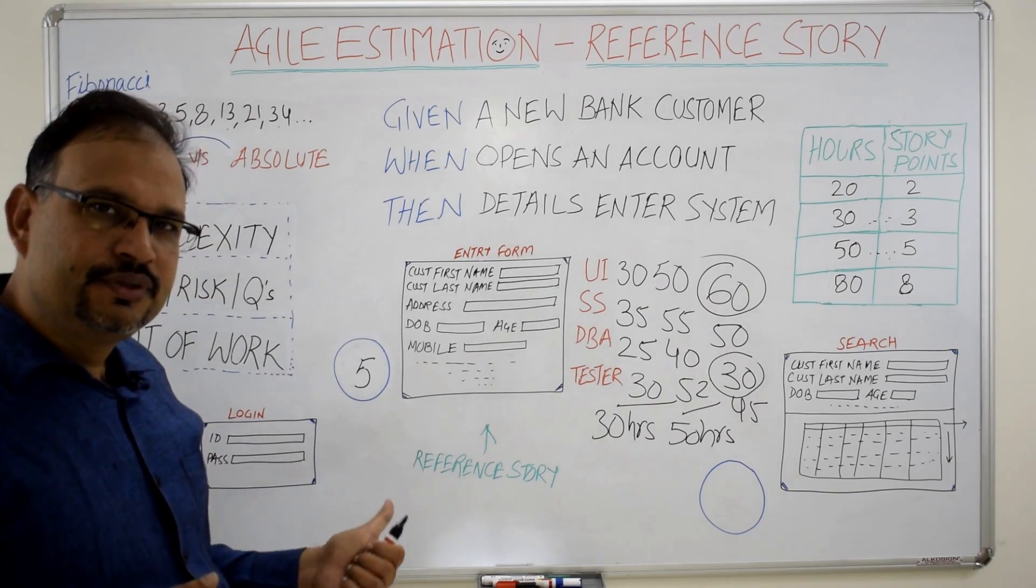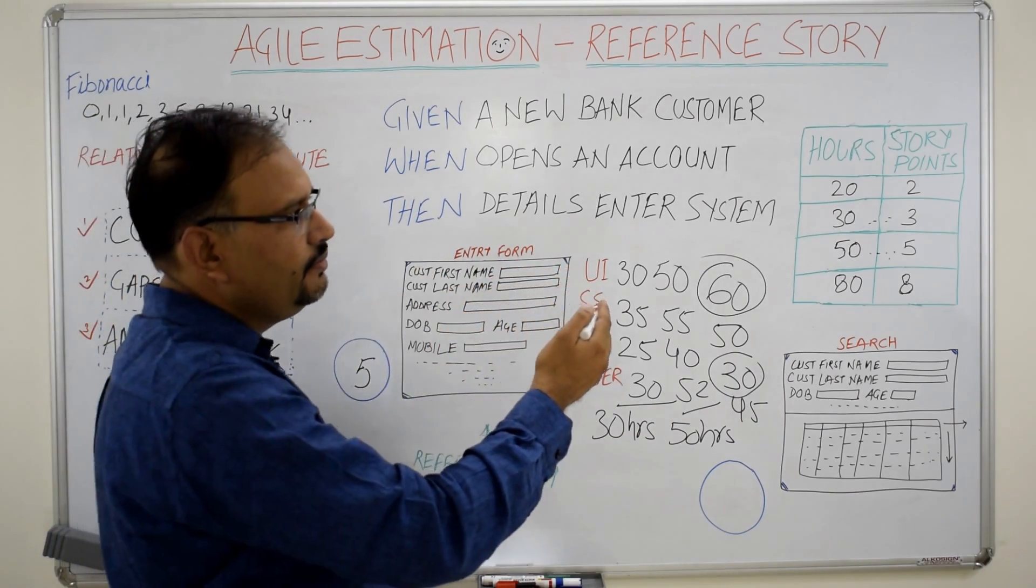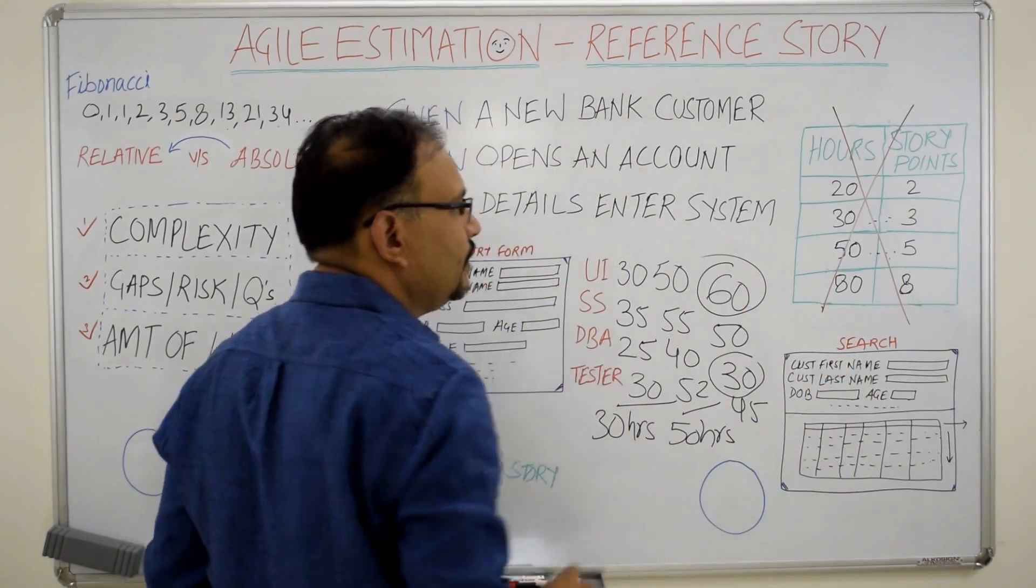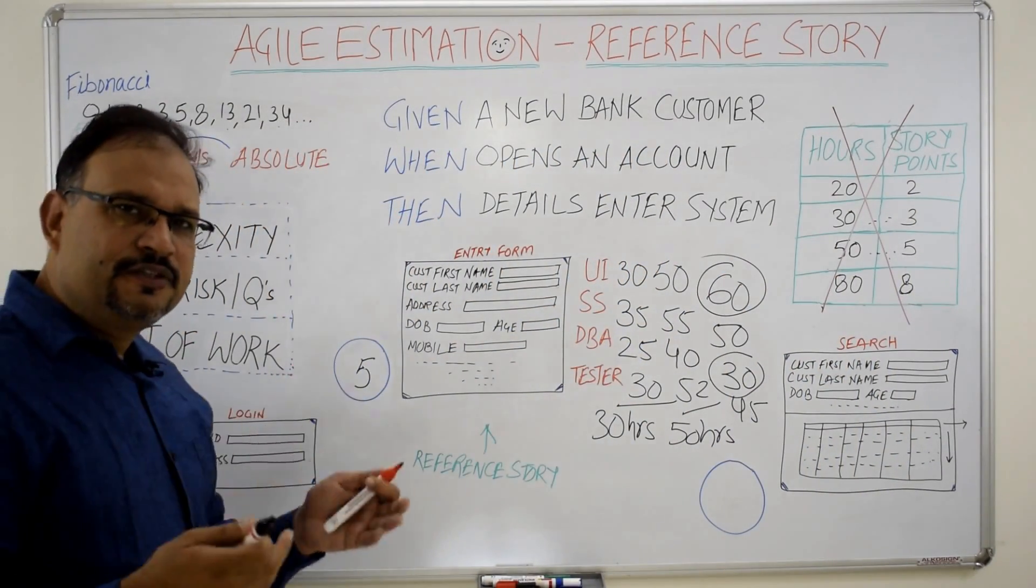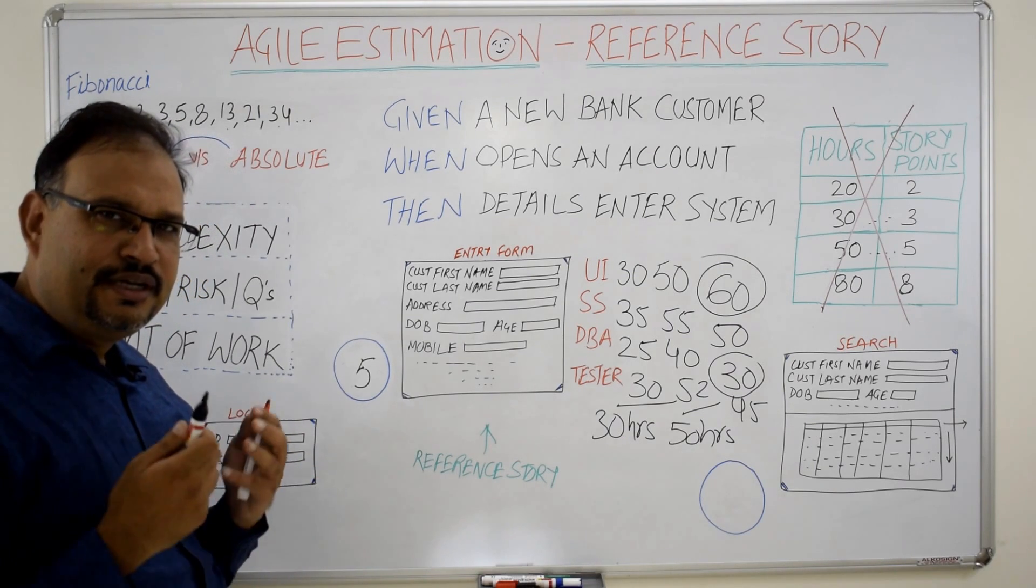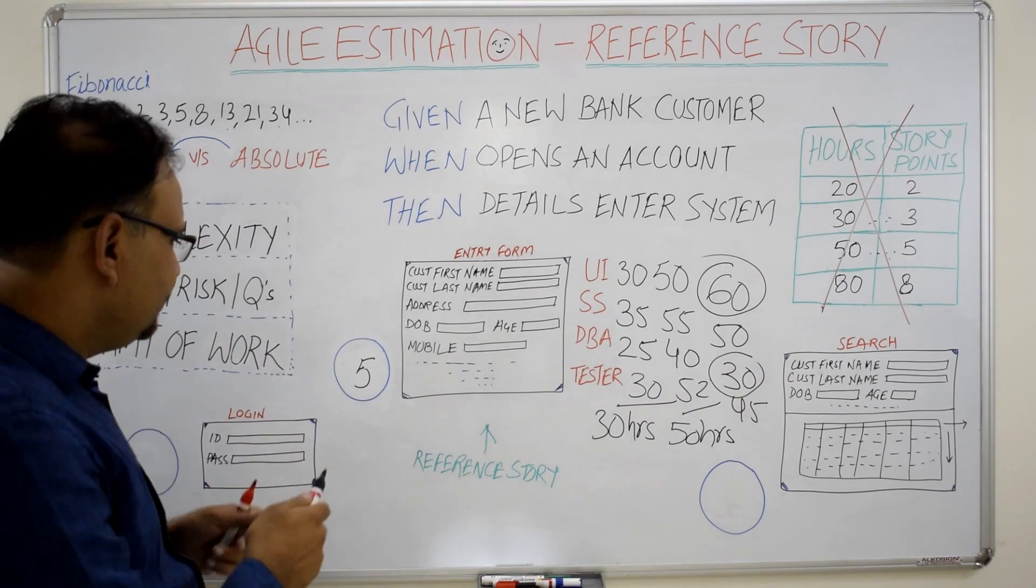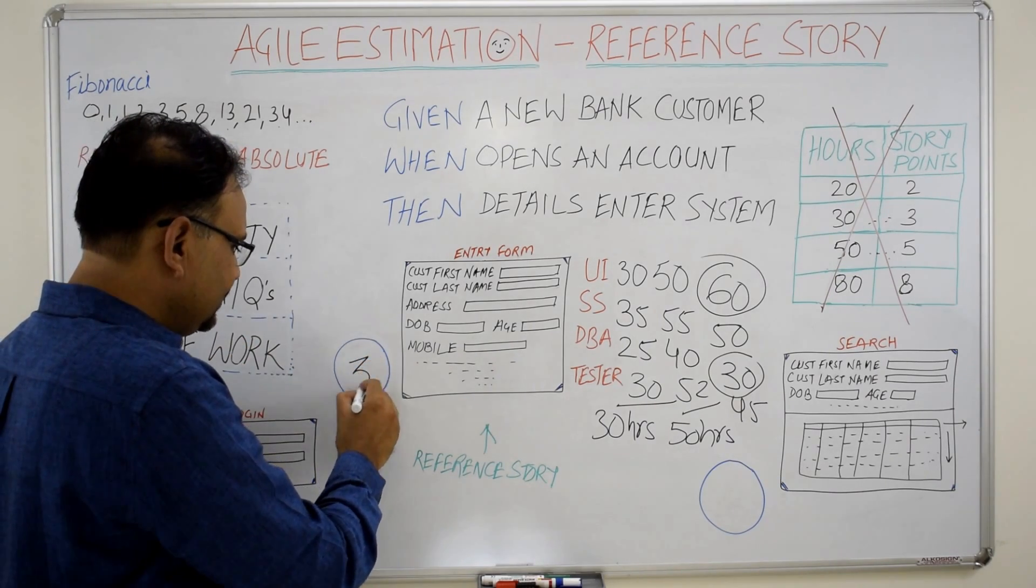Once we have decided a story point for the reference story, we are going to cancel out this table. We are not going to use it any further. To keep it simple and for the purpose of our example, let's assume the team has agreed a story point of 3 for this story. So let's make it 3 and see some examples.